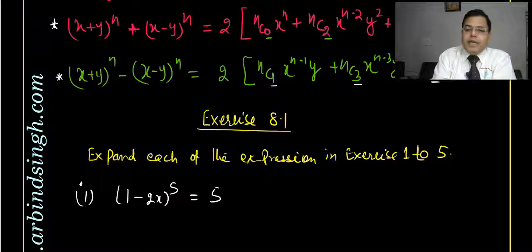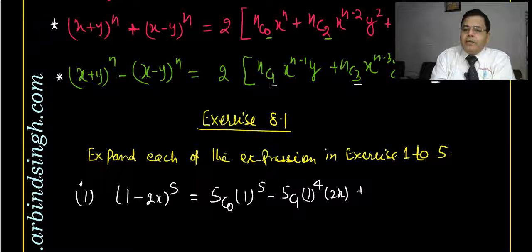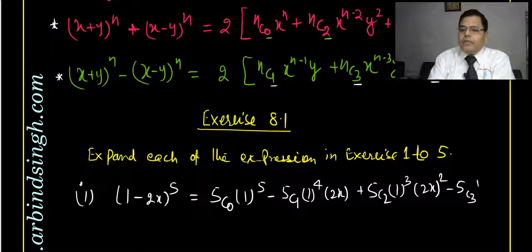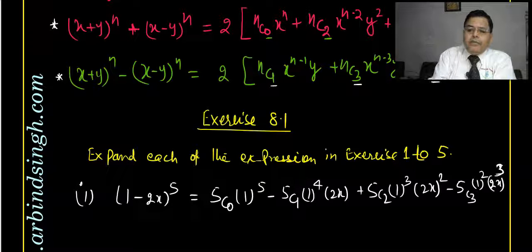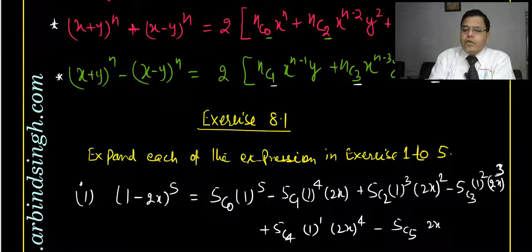As per the definition, we write: 5C0 times 1 to the power 5, minus 5C1 times 1 to the power 4 times 2x, plus 5C2 times 1 to the power 3 times 2x squared, minus 5C3 times 1 squared times 2x cubed, plus 5C4 times 1 times 2x to the power 4, minus 5C5 times 2x to the power 5. The alternate negative signs appear because of the minus in 1 minus 2x.